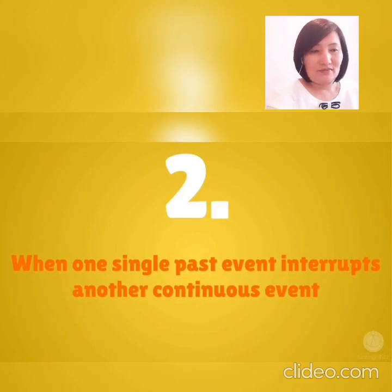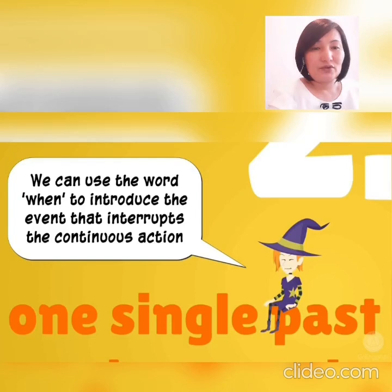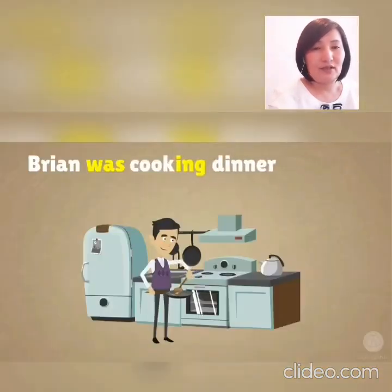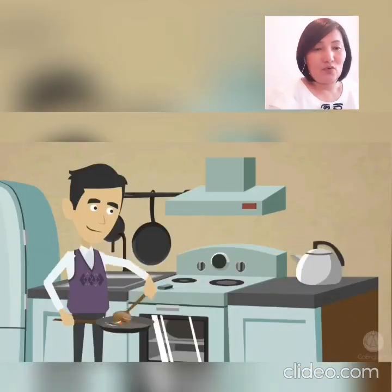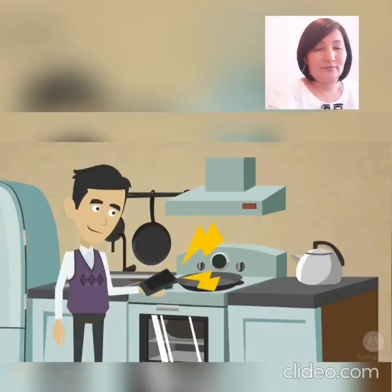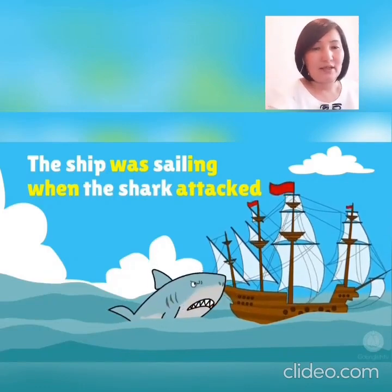Number 2: when one single past event interrupts another continuous event. To describe the single past event, we use the past simple tense. We can use the word 'when' to introduce the event that interrupts the continuous action. For example: Brian was cooking dinner when the phone rang.